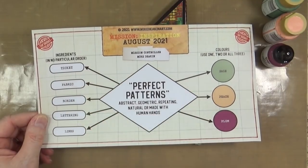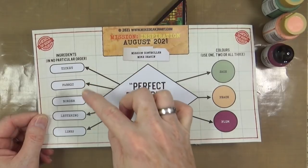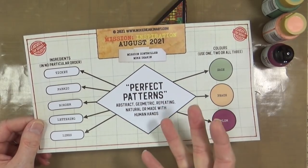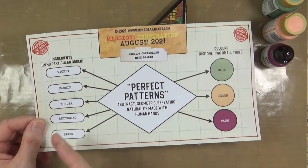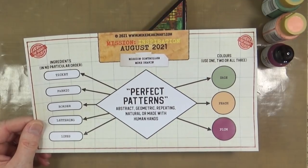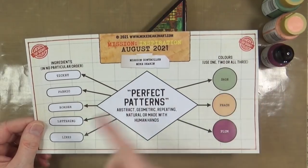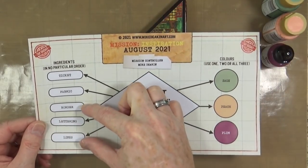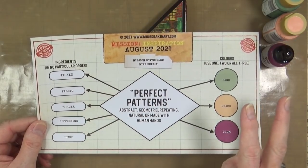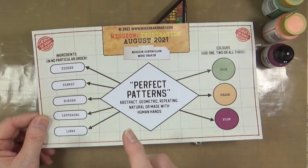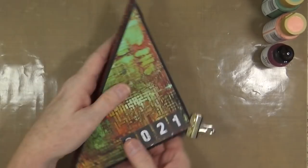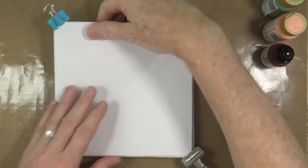This is the prompt sheet for the month of August 2021. Your colors for the month are sage, peach, and plum. Your theme is perfect patterns - could be abstract, geometric, repeating patterns, natural patterns, or made with human hands. Your ingredients in no particular order are tickets, fabric, a border, some lettering, and lines. You could use the lines to do a grid pattern, or the lines could be part of your border, so you're killing two birds with one stone.